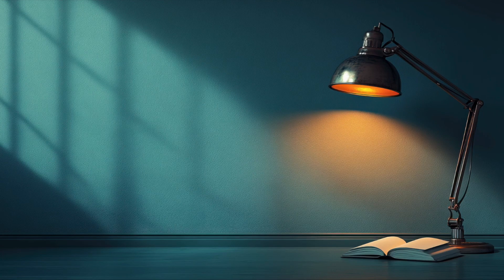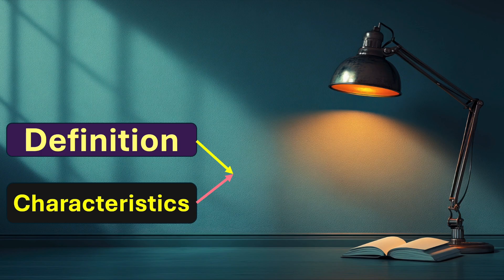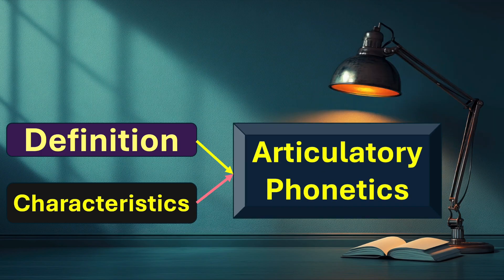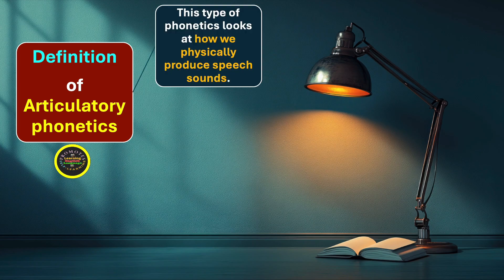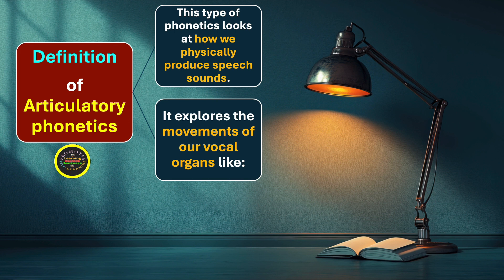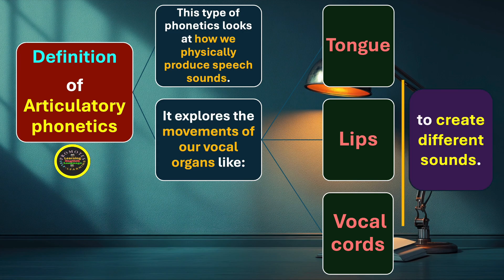Hello and welcome to a new lesson: Definition and Characteristics of Articulatory Phonetics. This type of phonetics looks at how we physically produce speech sounds. It explores the movements of our vocal organs, like the tongue, lips, and vocal cords, to create different sounds.